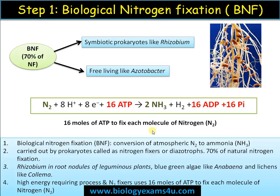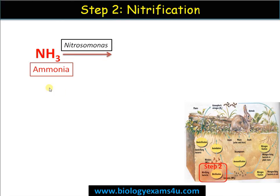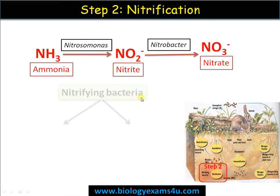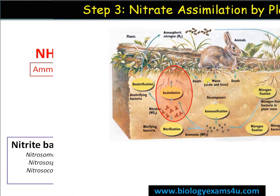Plants and animals cannot carry out nitrogen fixation — it is carried out only by prokaryotes. Step two is nitrification. Nitrification is the conversion of ammonia first to nitrite NO2, then to nitrate NO3, by two groups of bacteria generally called nitrifying bacteria. The first group — nitrite bacteria including Nitrosomonas, Nitrosospira, and Nitrosococcus — converts ammonia to nitrite. The second group, such as Nitrobacter, converts nitrite to nitrate.